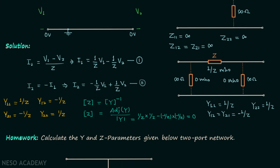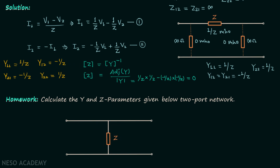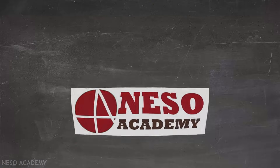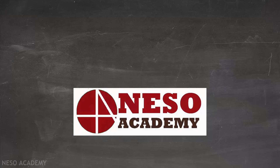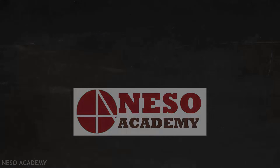Now we will move on to the homework problem. In the homework problem, you are required to calculate the Y parameters and the Z parameters of a given two-port network. Try to solve the problem and once you have your answer, post it in the comment section.